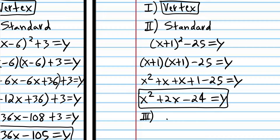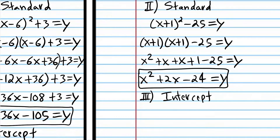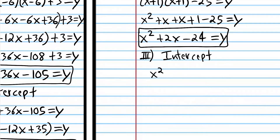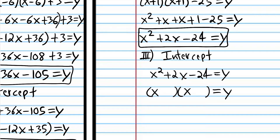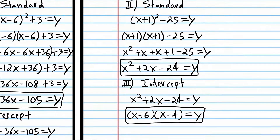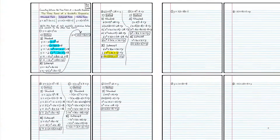Now we're going to convert to intercept form by taking standard form and factoring that quadratic: what two numbers multiply to negative 24 and add up to 2? That's positive 6 and negative 4. So that is intercept form. Again, all those problems started with vertex form, converted to standard form, then to intercept form.